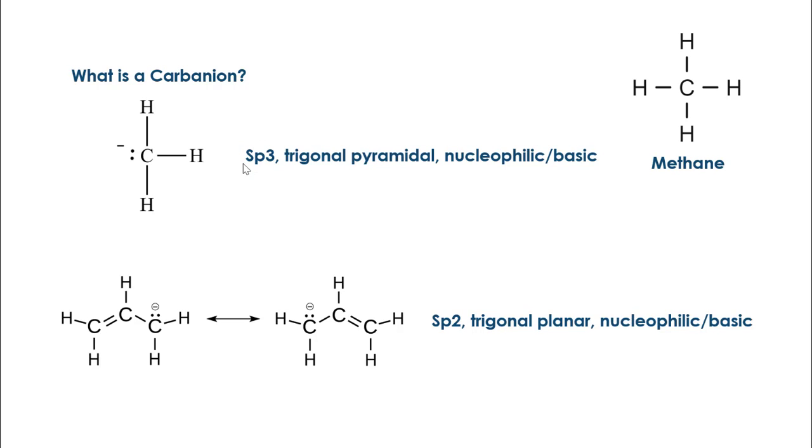Another part is the hybridization. If you look at this carbon, it's going to have one, two, three, four electron groups around it, giving it a hybridization of sp3.